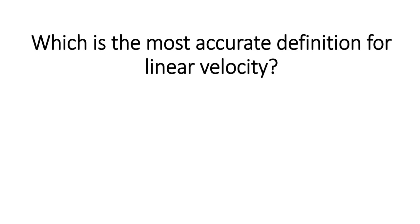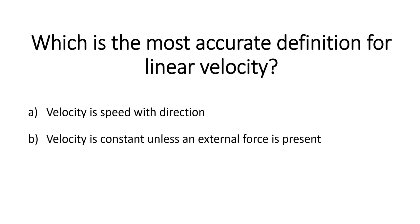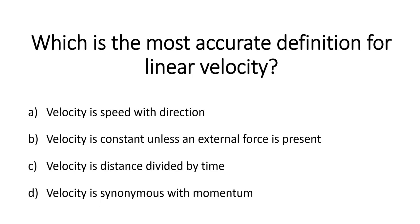Which of the following is the most accurate definition for linear velocity? There may be one or two definitions here that could be acceptable, but which is the best? A. Velocity is speed with direction. B. Velocity is constant unless an external force is present. C. Velocity is distance divided by time. D. Velocity is synonymous with momentum. Pause the video, have a think and we will move on to the next question.